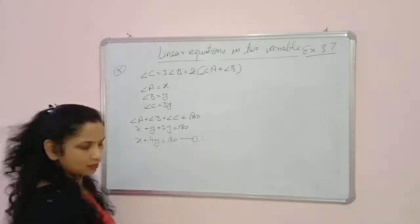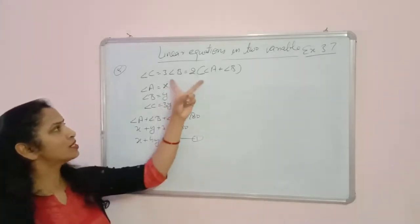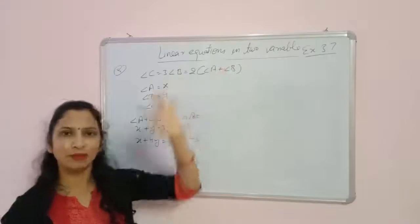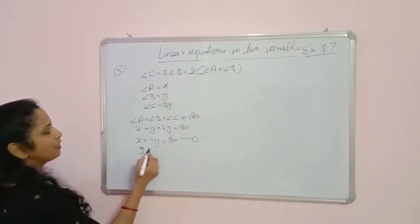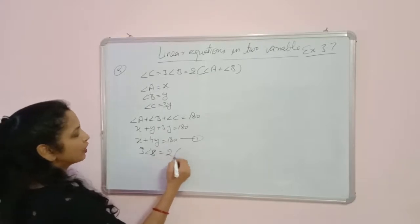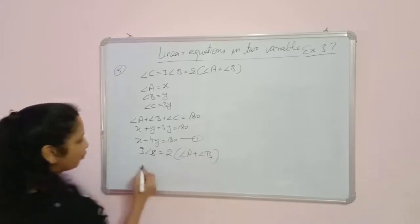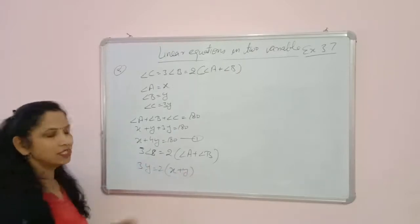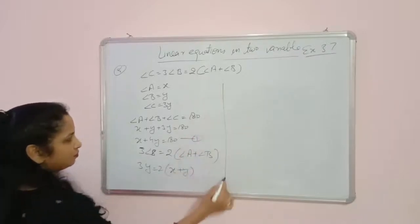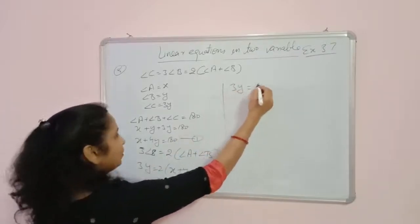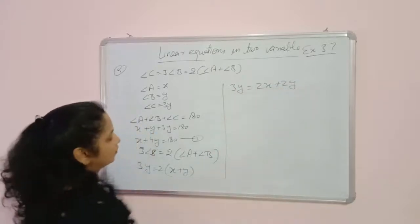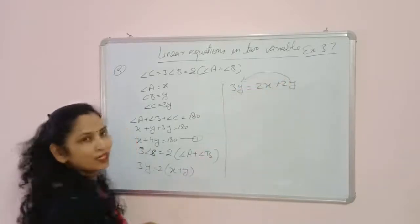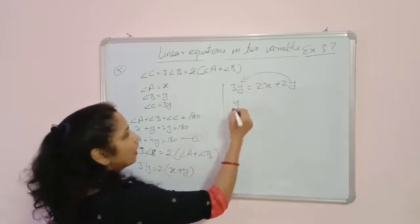Using the second relation — thrice angle B equals twice angle A plus angle B — we substitute: 3y equals 2x plus y. Bringing 2y to the LHS and changing its sign gives y equals 2x. This is equation 2.